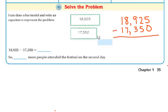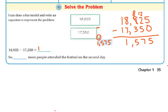So 5 minus 0 is 5. I can't do 2 minus 5, so I'm going to have to go to the next number and regroup. This is now going to be 800s, and I'm going to take what I regrouped and put it over here — this is now 12 tens. So 12 tens minus 5 is 7. Then 8 minus 3 is 5, and 8 minus 7 is 1, and 1 minus 1 is 0. So this little space is 1,575. So 1,575 more people attended the festival on the second day.